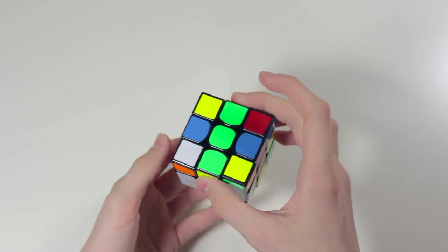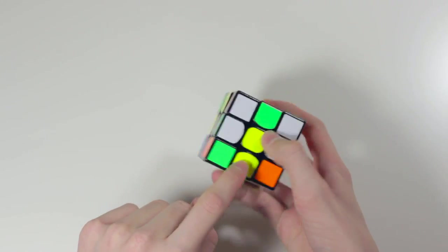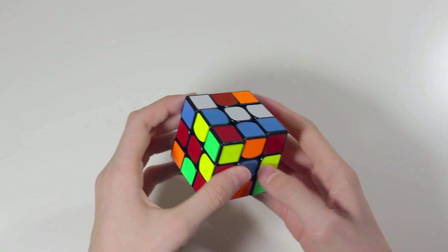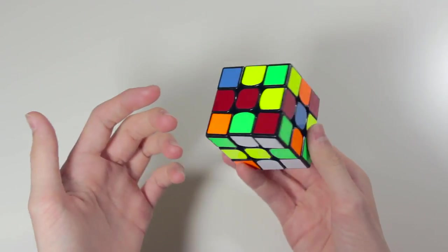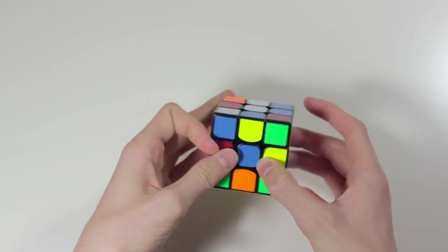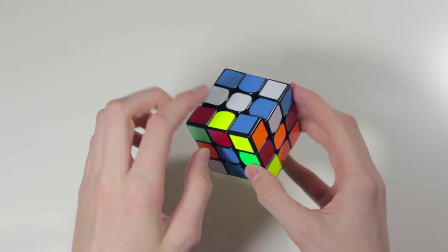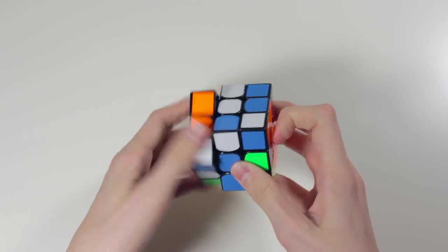Okay, so for this cross I would definitely do yellow, because I already have this cross piece in, and this one, and then these two aren't that hard to get in. So what I would do is I would bring this down, but first I would bring this over, so then I can insert that with an extra move, and then I just insert that.